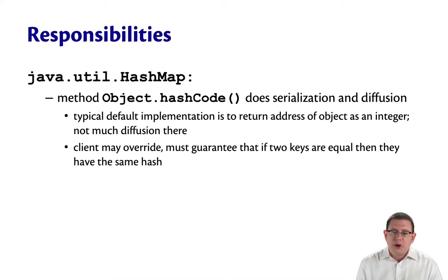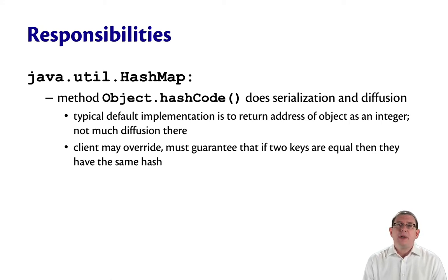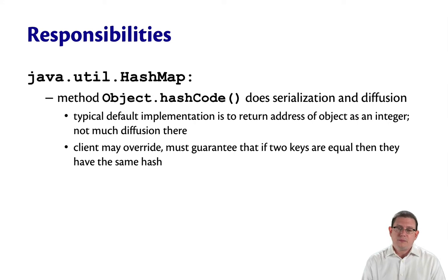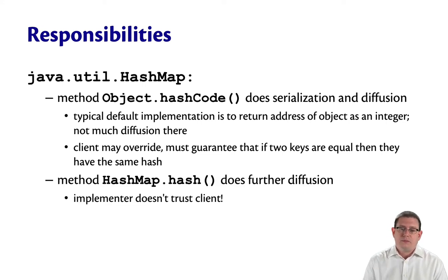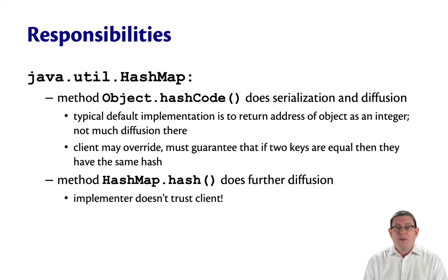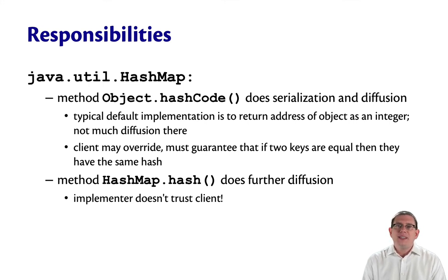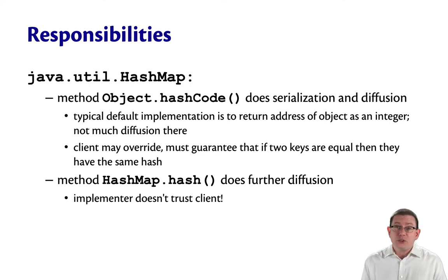The typical default implementation is for hashCode to return the address of an object as an integer. There's not much diffusion there because the addresses of objects within any given running VM are not that different from one another — they all tend to be within a fairly similar heap space. You can override hashCode as a client, but then you have to guarantee that if two keys are equal, they have the same hash. There is another method inside the implementation of java.util.HashMap called hash, which does further diffusion on top of whatever hashCode does. This is an effort to protect you from yourself — if you accidentally provide a bad hashCode function, this does some extra diffusion to make sure hash table performance doesn't degrade.